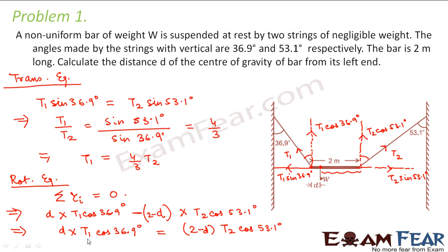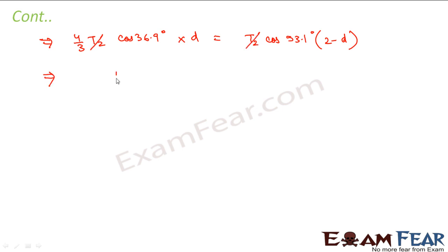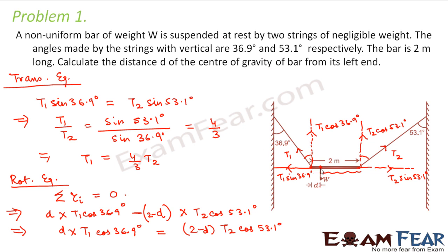Substituting T1 = (4/3)T2, we get (4/3)T2 cos 36.9° × d = T2 × cos 53.1° × (2 − d). The T2 terms cancel. Solving gives 1.067d + 0.6d = 1.2, which implies d = 0.72 meters. So the center of gravity lies at a distance of 0.72 meters from the left end of the bar.